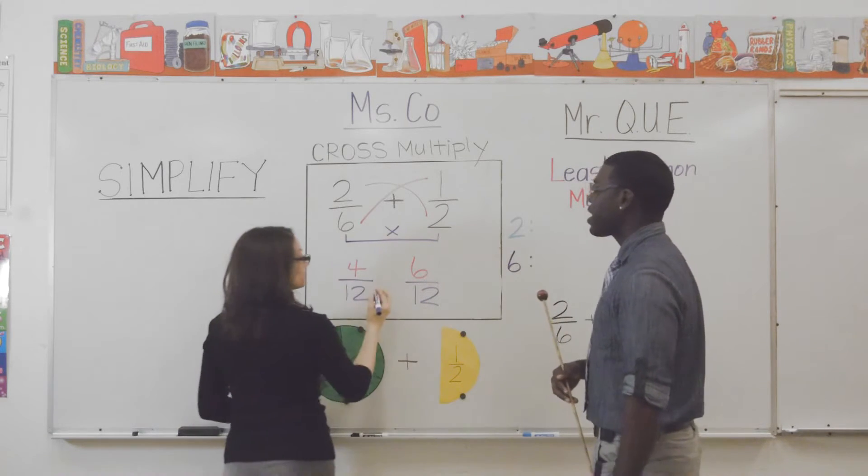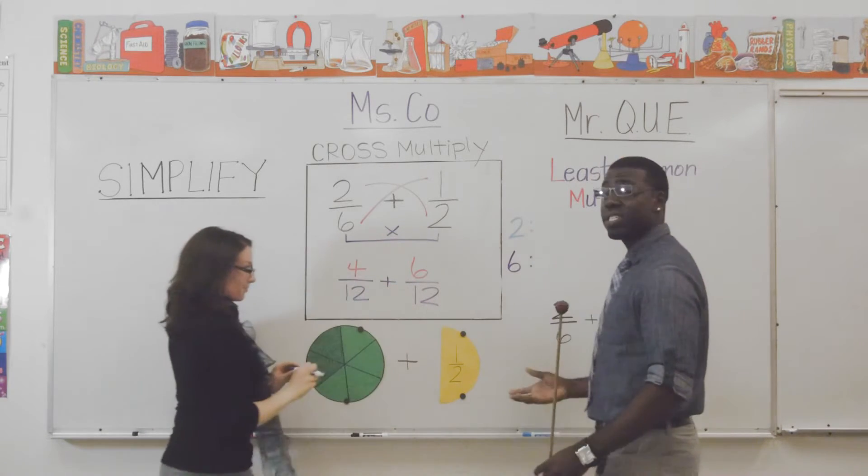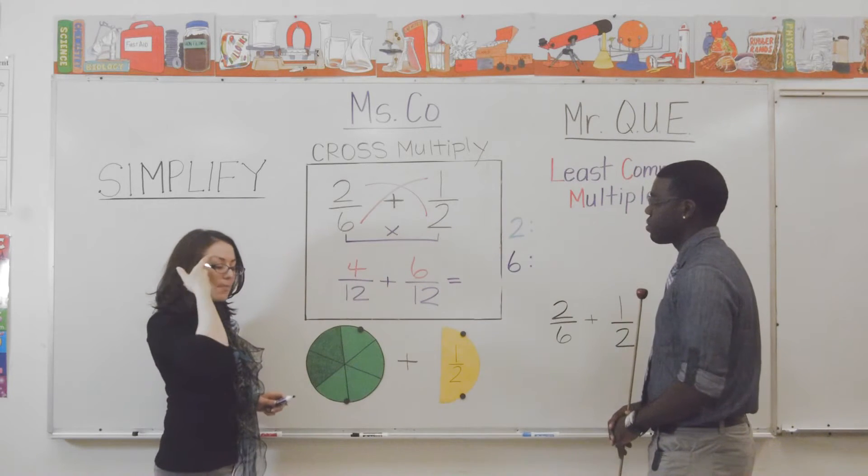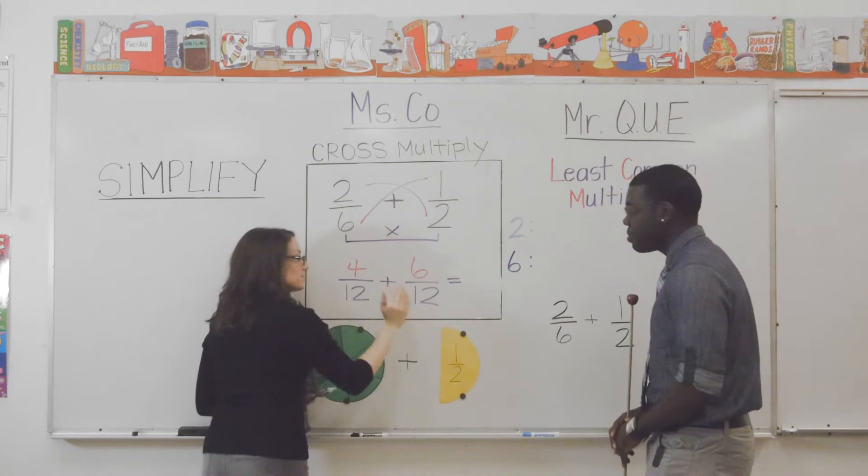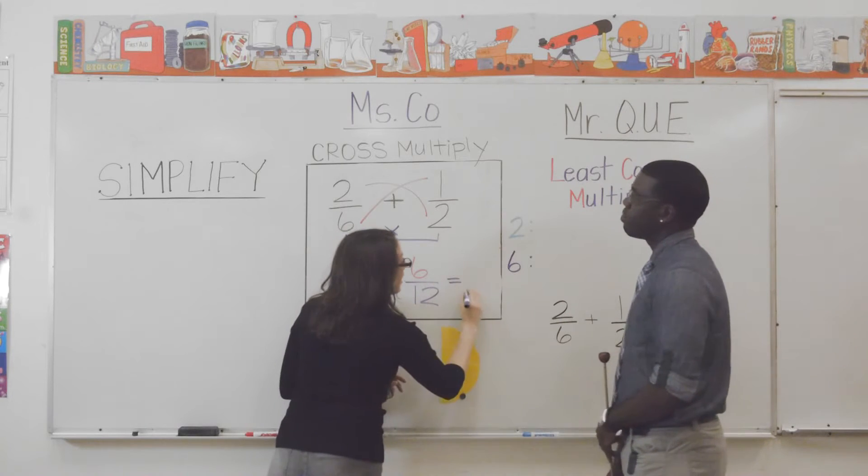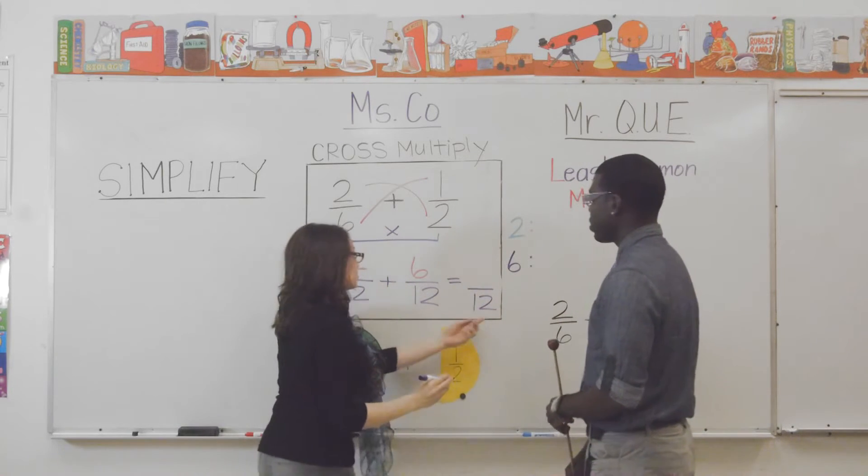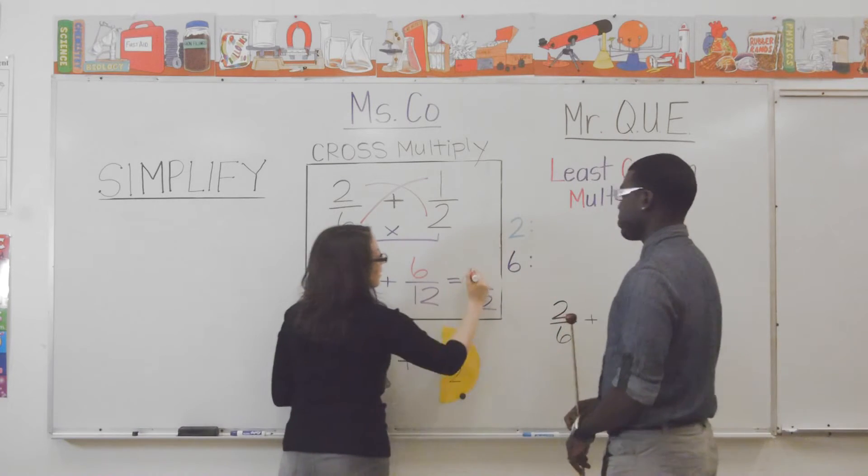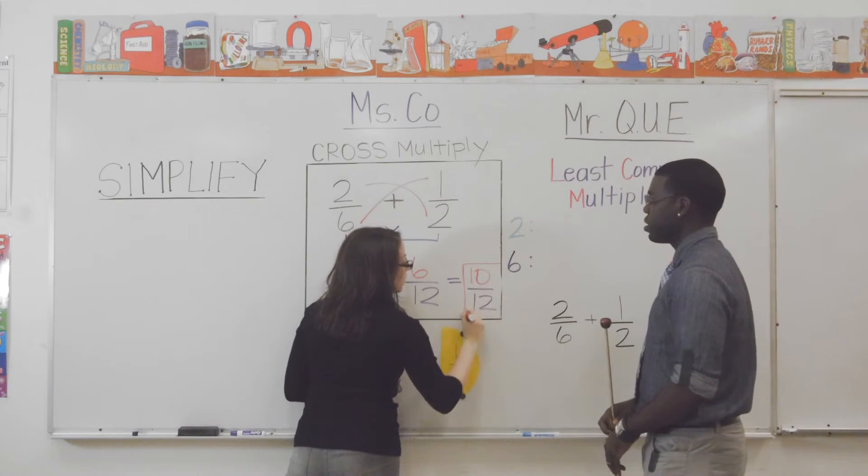Can you add these fractions now? Yes, I can. I have denominators that are the same. Yes. So, because you have denominators that are the same, you remember it by saying, same, same, same. Now, our answer is in twelfths and add up the numerators. Four plus six is ten. Okay. So, my answer is ten twelfths.